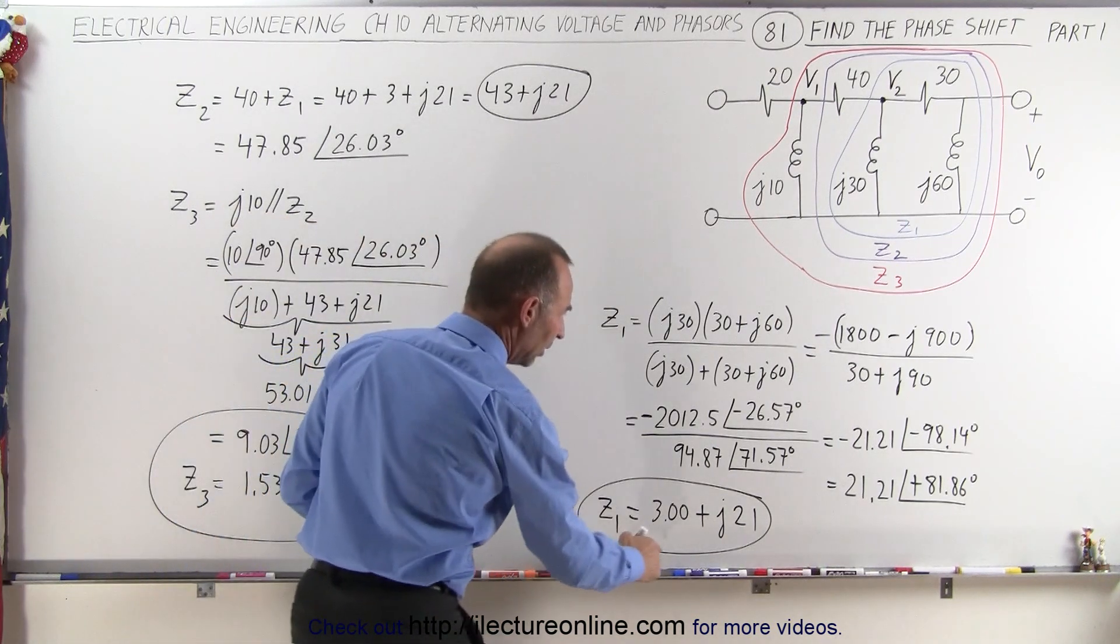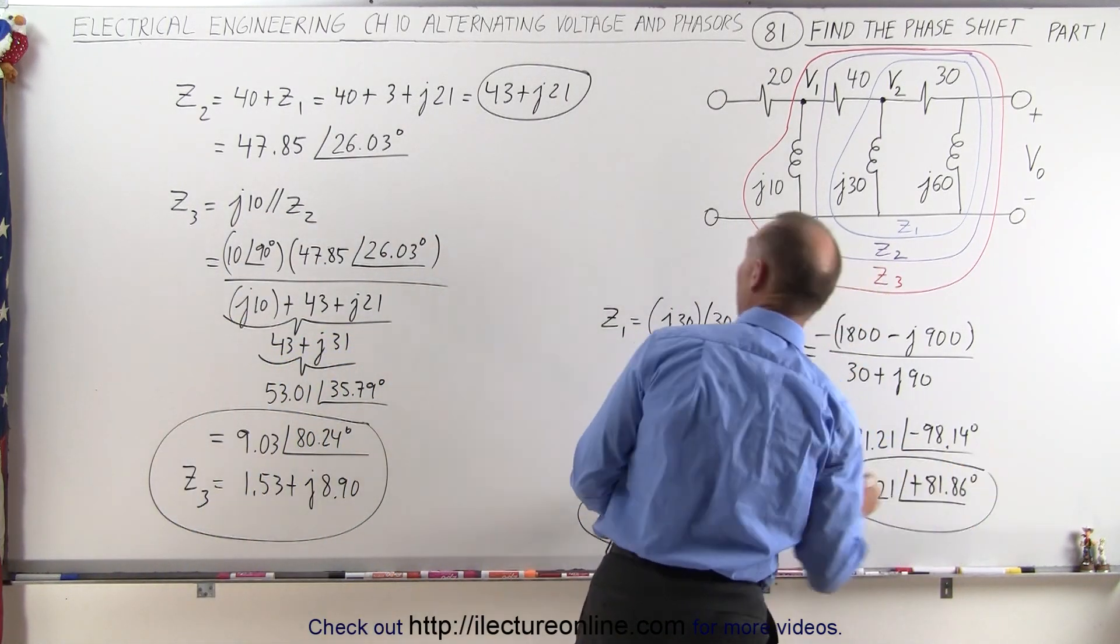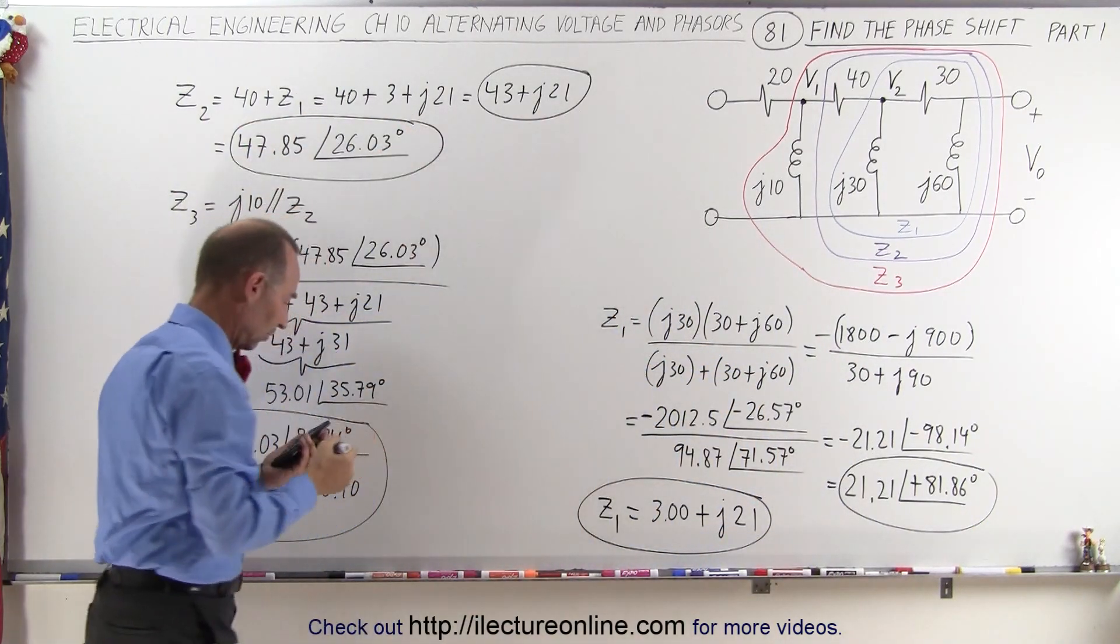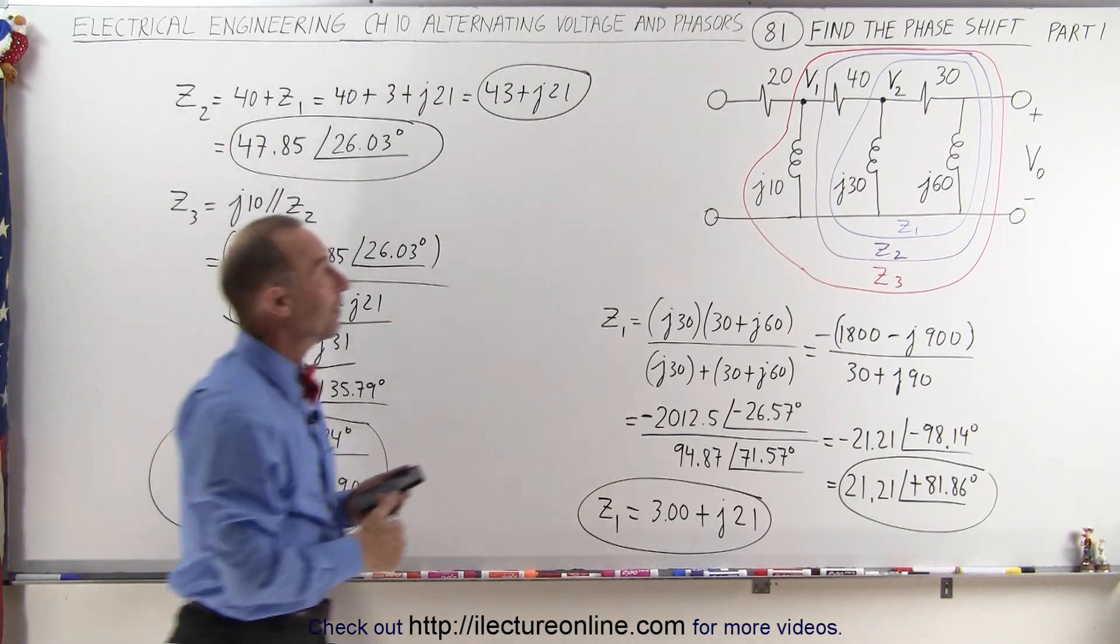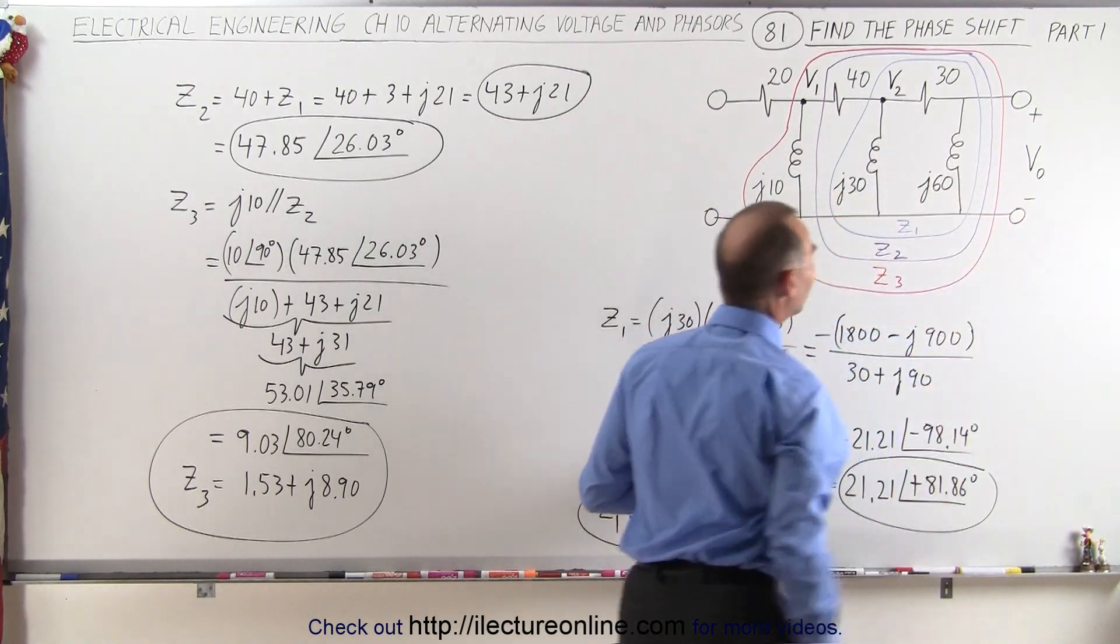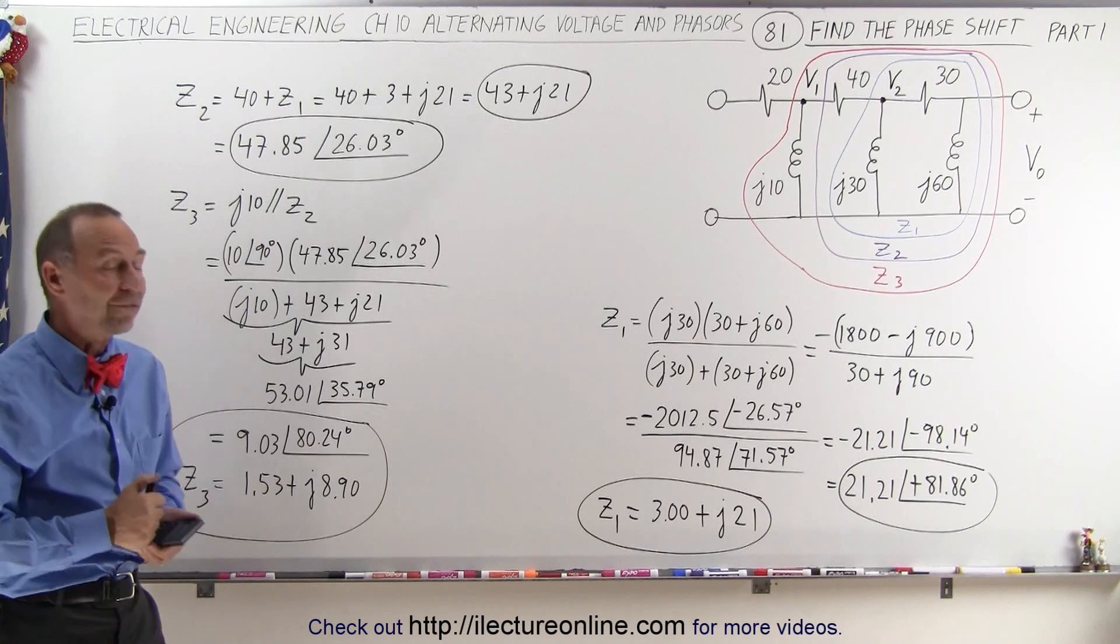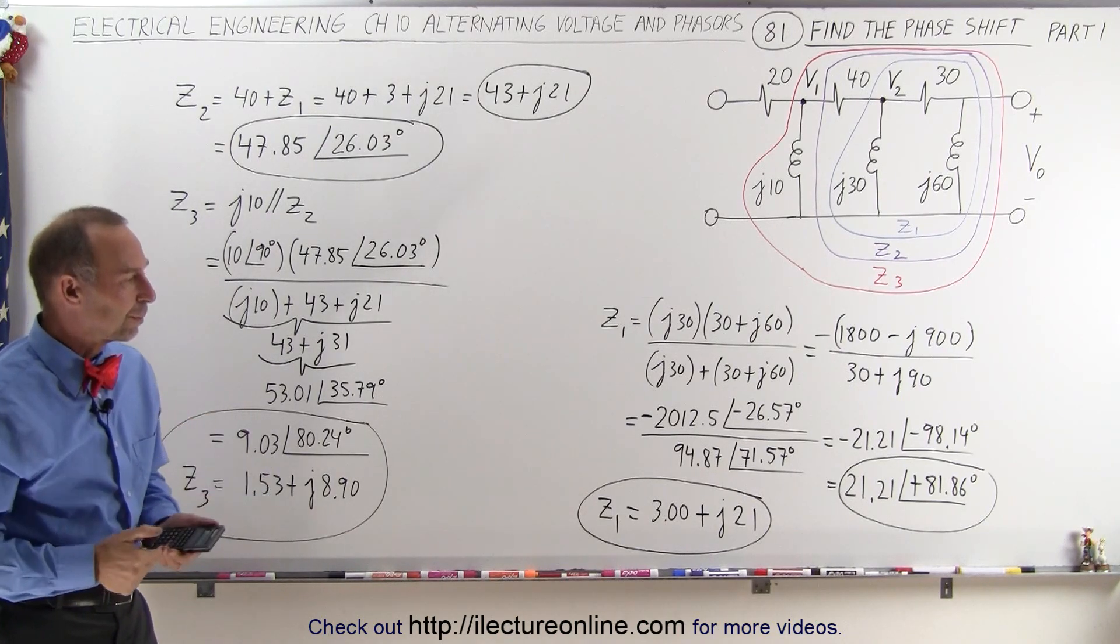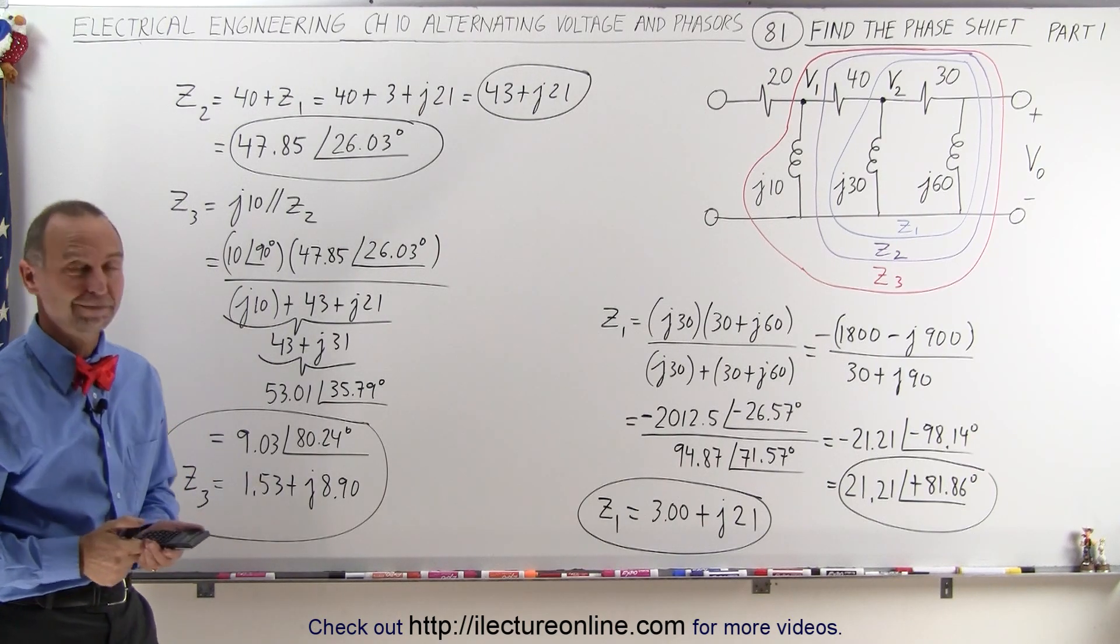Now we're ready to find V1 and V2, and from that we can then find V0. So that's the strategy, and at least we got half of it done. Stay tuned for the second half and then we'll do the rest of the problem and find the output voltage. And that's how it's done. Thank you.